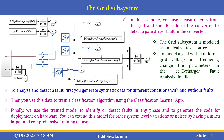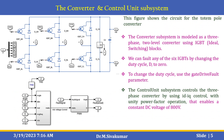We can use real-time applications and extend this model for other system-level variations or noises by having a much larger, comprehensive training dataset. This is another subsystem called the converter and control unit subsystem. The converter subsystem is modeled as a three-phase, two-level converter using IGBT under ideal switching conditions. You can fault any of the six IGBTs by changing the duty cycle D to 0. To change the duty cycle, use the gate driver fault parameters available in the subsystem.